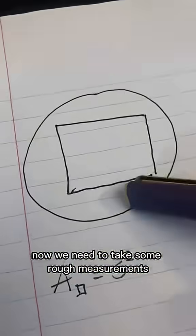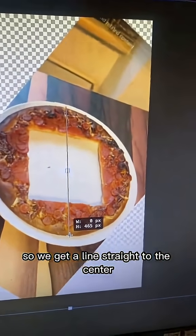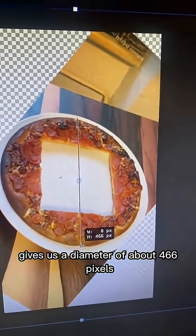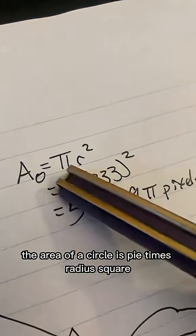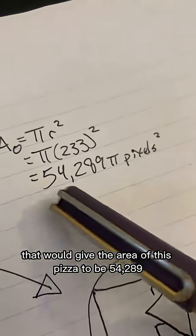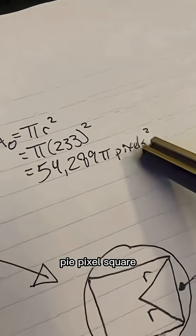But since you didn't, now we need to take some rough measurements. Straightening out the pizza so we get a line straight to the center gives us a diameter of about 466 pixels, or a radius of 233 pixels. And given that the area of a circle is π times the radius squared, that would give the area of this pizza to be 54,289π pixels squared.